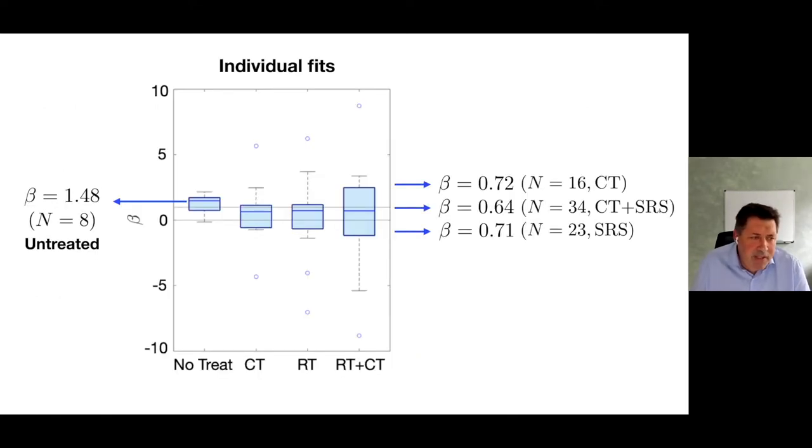If you do that for the whole dataset, you get for untreated mets the growth exponent is 1.48. For treated metastases, either with chemotherapy only, with radiotherapy only, or with combinations, you get consistently beta exponents smaller than 1.